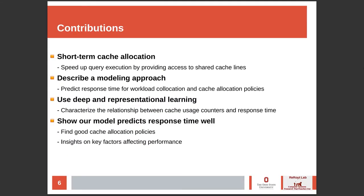In this work, we make the following contributions. We use short-term cache allocation to speed up query execution by providing access to shared cache lines. We describe our modeling approach that predicts response time for workload co-location and cache allocation policies. We use deep and representational learning to characterize the relationship between cache usage counters and response time. Finally, we show our model predicts response time well and helps find good cache allocation policies and key factors affecting performance.